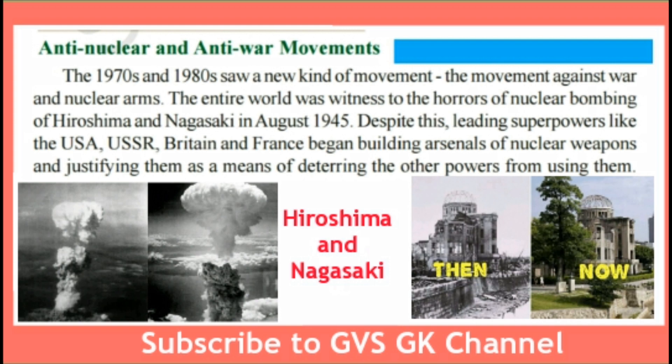Despite this experience, leading superpowers like the USA, USSR, Britain and France began building arsenals of nuclear weapons, justifying them as a means of deterring other powers from using them. The two powers — USSR and USA — competed with each other to manufacture nuclear weapons. In response, some countries, especially within the USSR, started anti-war and anti-nuclear movements in the 1970s and 1980s.